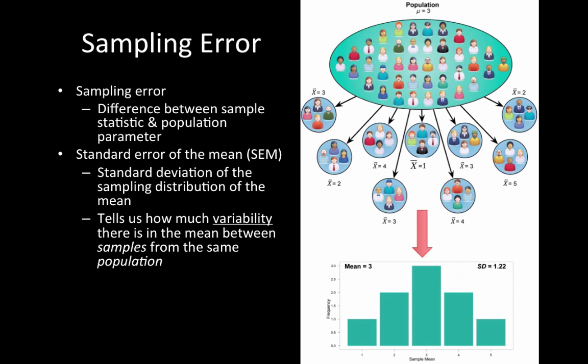With standard error of the mean and sampling error, we're stepping it up. We're not looking at individuals within the sample, but at samples within the entire population—inferential statistics. Can we infer results from a sample to the larger population?